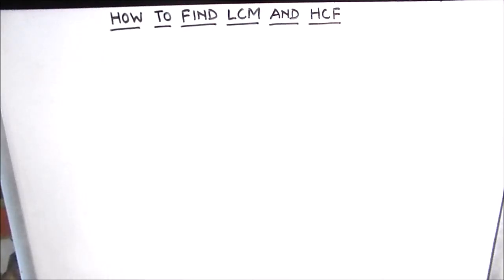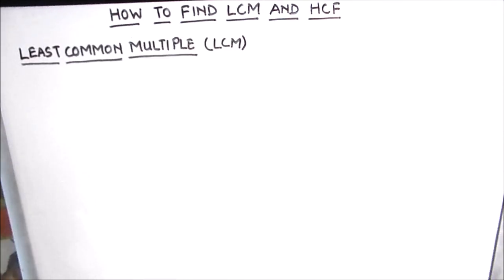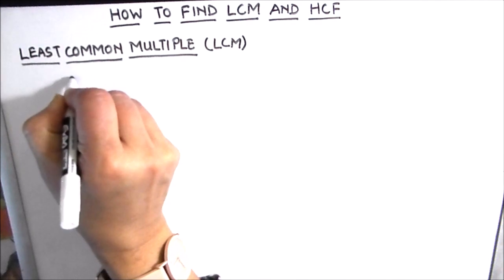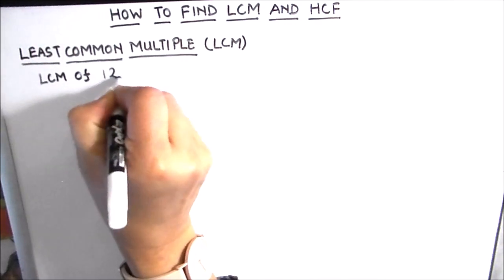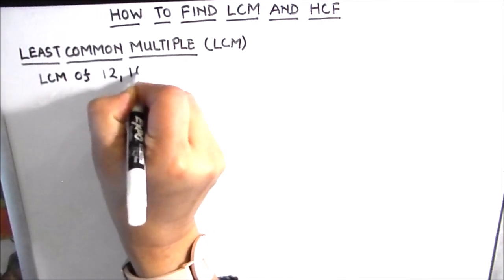Hello students. In this video we are going to learn how to find LCM and HCF. The least common multiple of two numbers is the smallest number which is a multiple of both numbers. Let us start by finding the LCM, or least common multiple, of 12, 16, and 18.